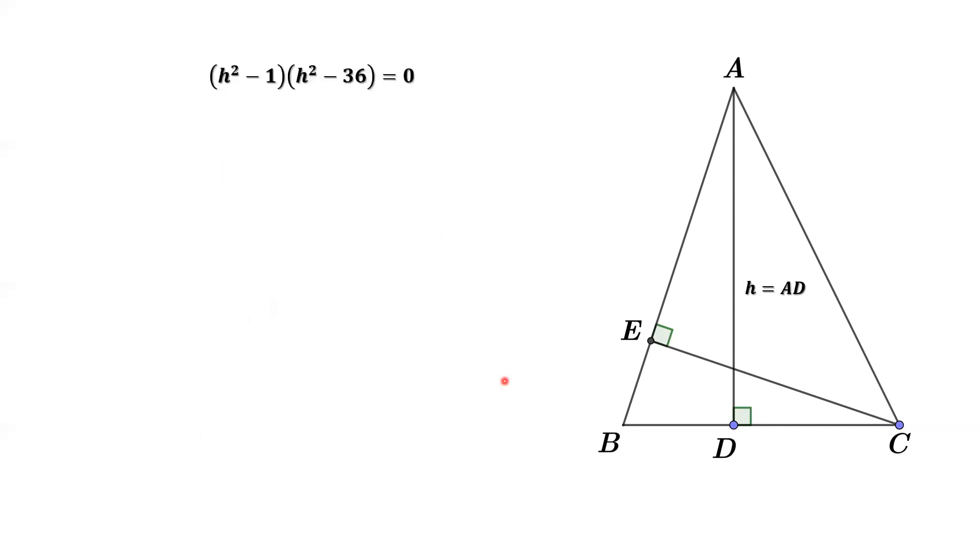This implies H square equals 1 or 36. Because, by definition, H is the height, which is positive. This implies H equals 1 or 6. When we take the square root on H square, we have two possible values. We don't need a negative value.